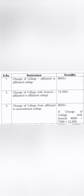The third category is change of college from affiliated to autonomous, meaning you are not changing the branch but moving to an autonomous college. There are only about 30 to 35 autonomous engineering colleges in all of Karnataka, including 13 to 14 in Bangalore itself. If you are moving from a non-autonomous affiliated college to an autonomous college like RV College of Engineering, BMS College of Engineering, Nitte Meenakshi, or BNMIT, the total fee is 15,500 rupees.